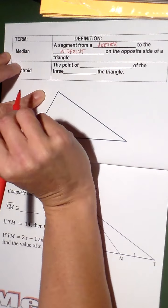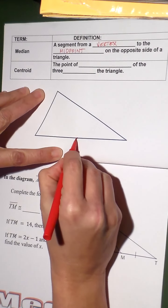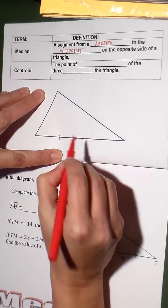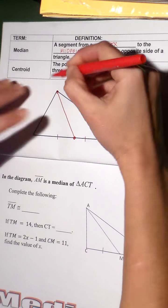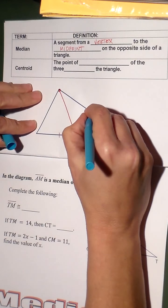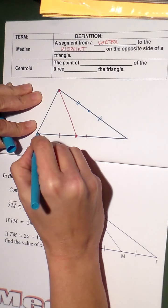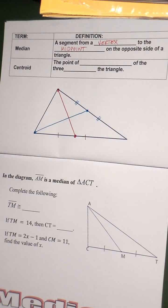So it's from the vertex to the midpoint of the opposite side. What I'm going to do is find the midpoint and connect it to the vertex, and that's my median. Midpoint to vertex. So let's do this one. Midpoint to vertex. So that's my second median.